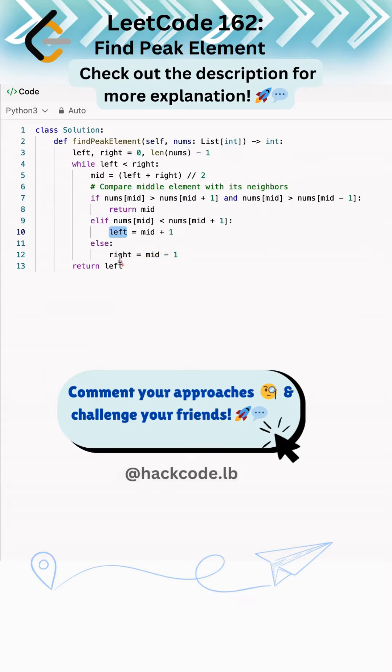We return left because left and right would be equal and the pointers would have converged to the peak element's index.